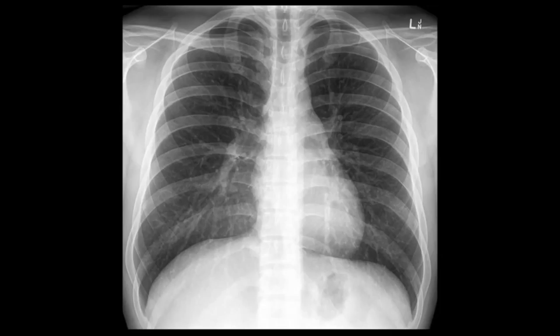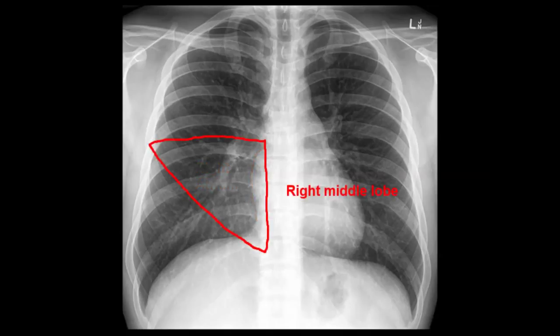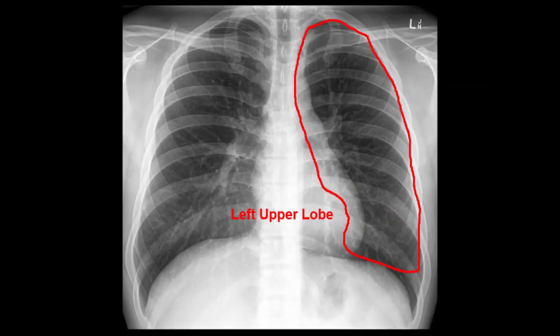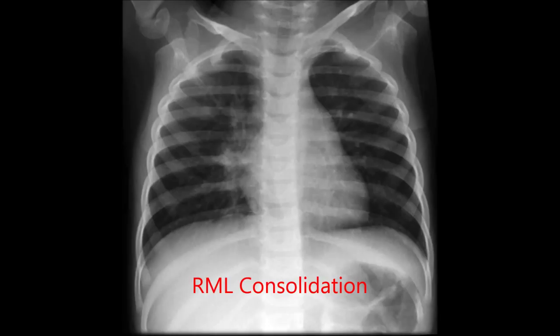E is the edge of the heart. Here you're looking for something called the silhouette sign — are the heart borders clearly defined? If not, this indicates that there is lung consolidation present. Remember: the right heart border touches the right middle lobe, while the left heart border touches the left upper lobe. These borders may be less well defined if there is consolidation in these lobes, such as in this example of right middle lobe consolidation.